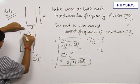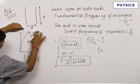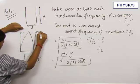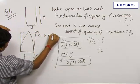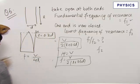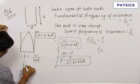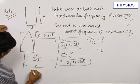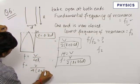Again, this node is actually formed a bit outside the length. This node has edge correction. Edge correction is always equal to 0.3D—remember this—where D is the diameter of the tube. Therefore, we can write this as V upon 4 times L plus 0.3D.